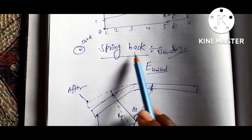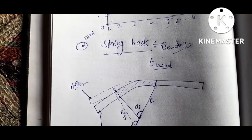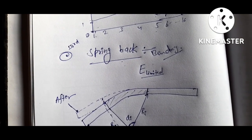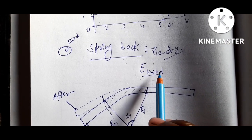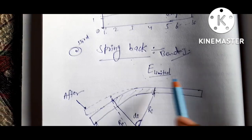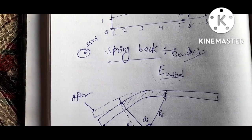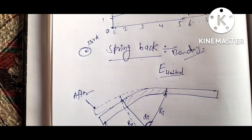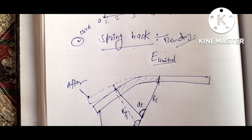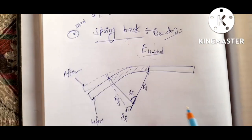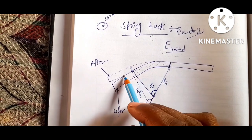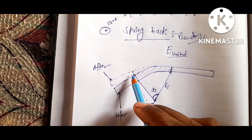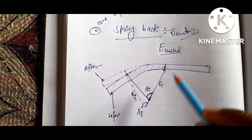In this third video we discuss about spring back in bending operations. All materials have a finite modulus of elasticity, so plastic deformation is always followed by elastic recovery upon removal of load. In bending, this recovery is known as spring back. This is the original bended part and after you remove the load, the metal shifts — this shifting is also known as spring back.